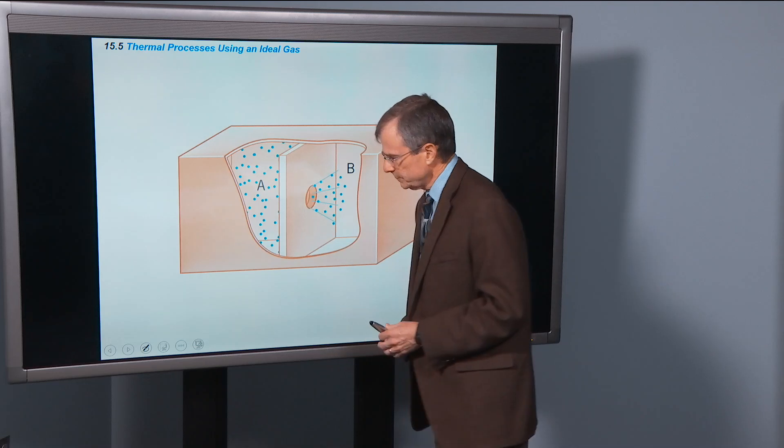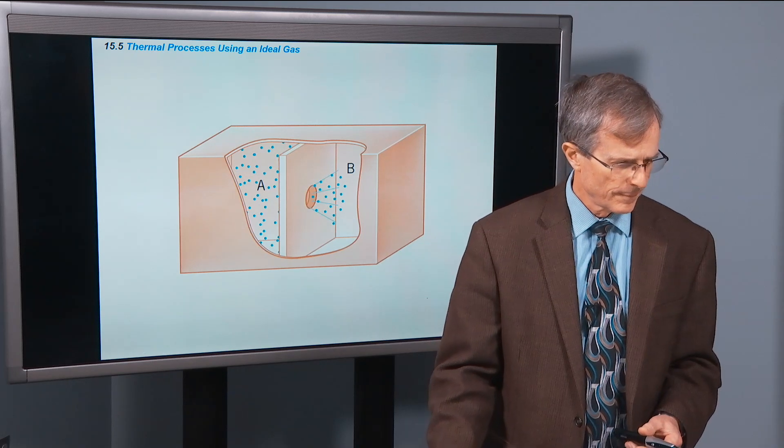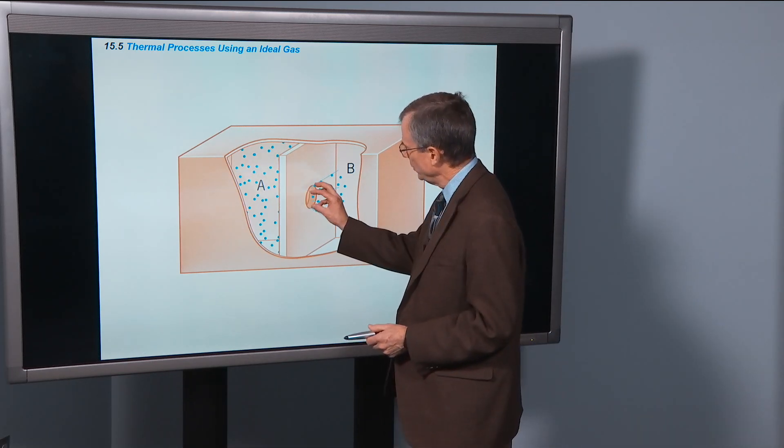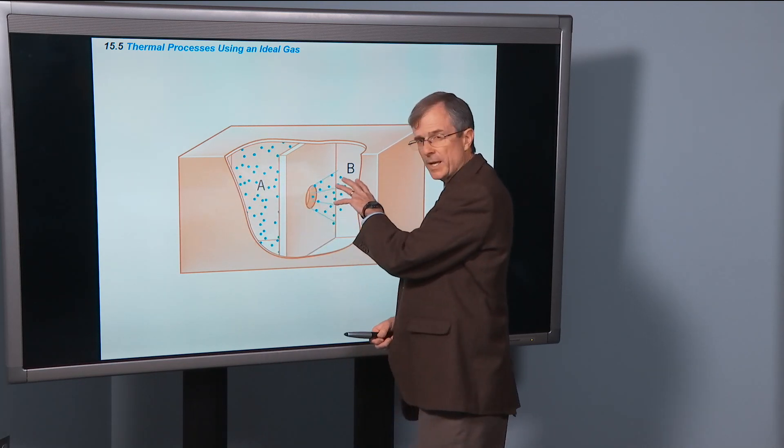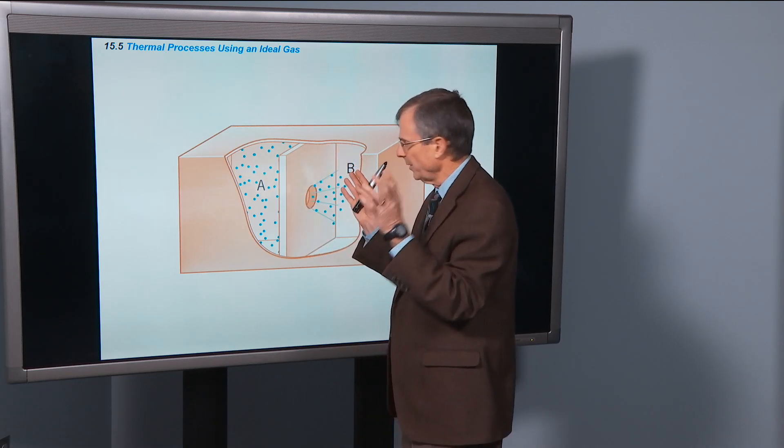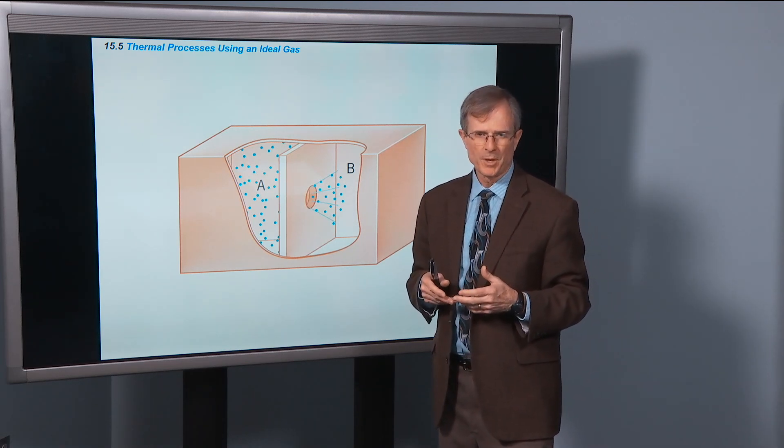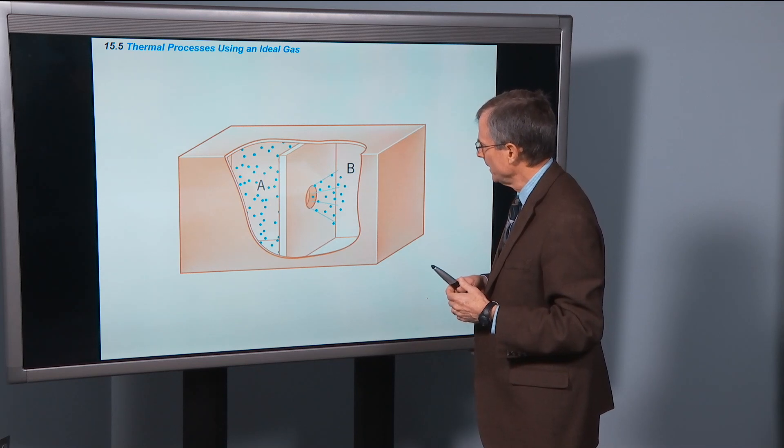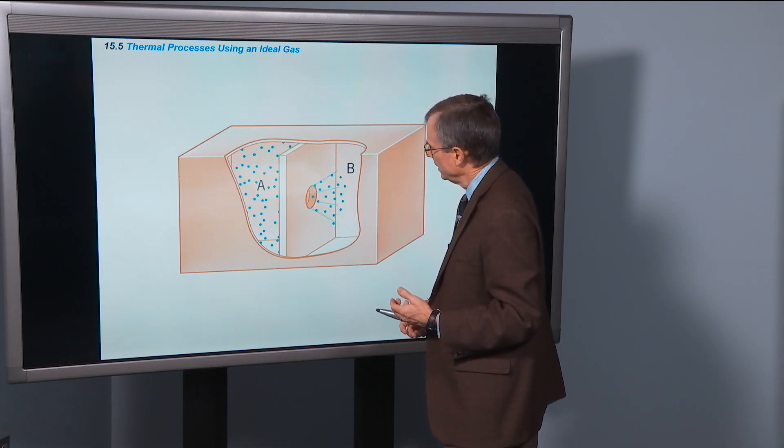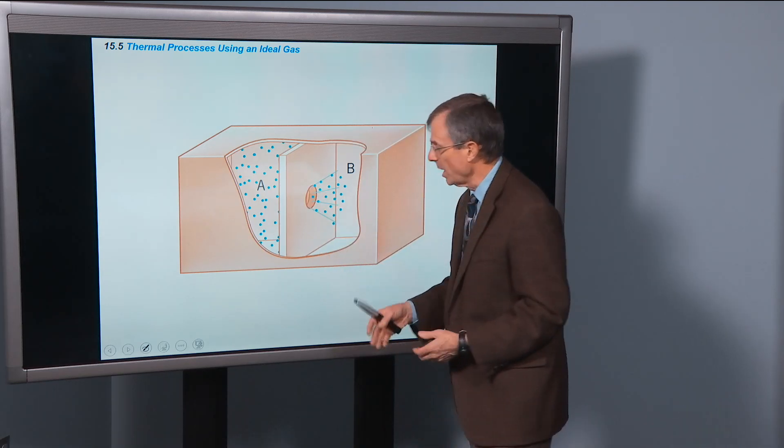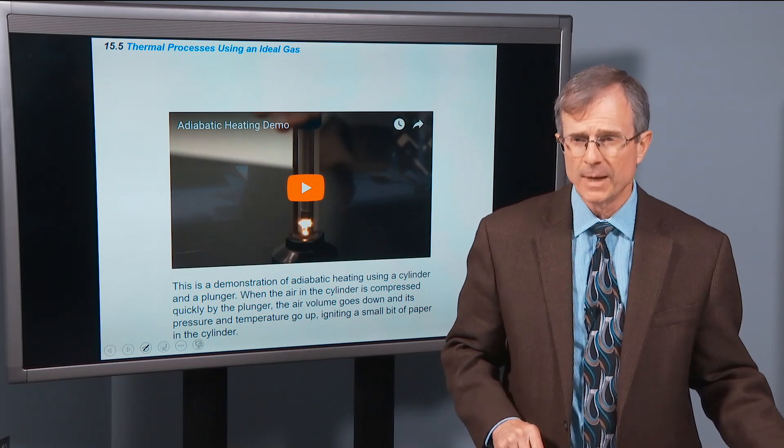So this is a sudden adiabatic expansion, where you all of a sudden open a hole between a region where there's a gas on the left side, but no gas on the right side, and it expands to fill that volume. We'll talk about reversibility later. This is an irreversible process. It happens over a very short period of time. But there's no heat lost or gained, no heat shared with the surroundings at all. Here's another example of an adiabatic expansion, where you're allowing this gas to expand into a compartment to the right.